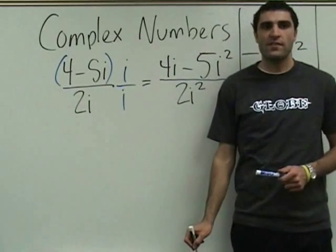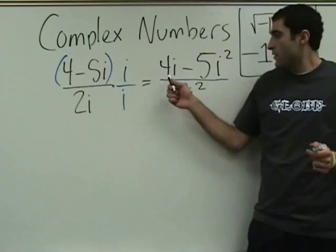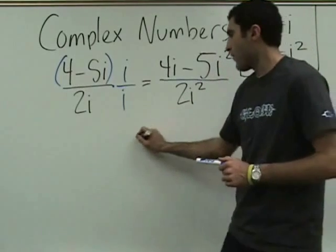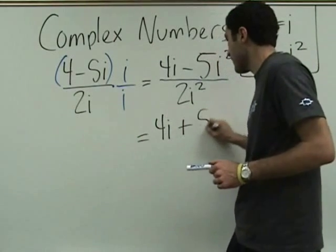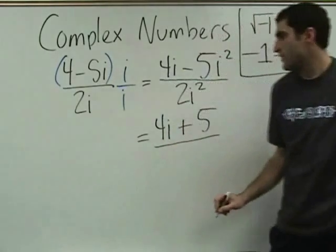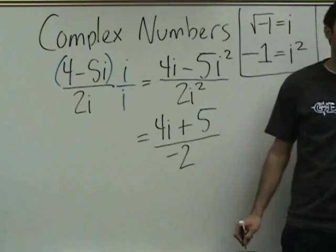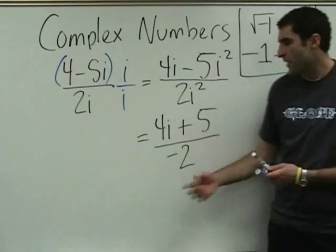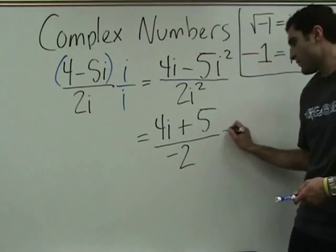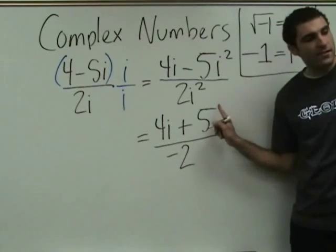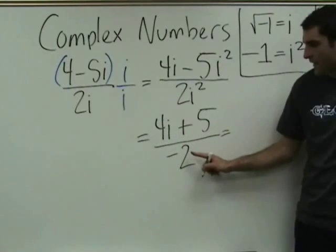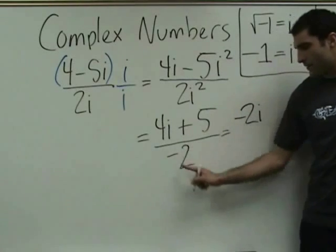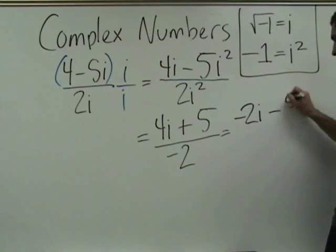Now we do a little simplification. On the top: 4i — what? Plus 5. Good. So 4i plus 5 over... and you said the bottom — what was it? Negative 2. Now, do you have a negative on the bottom? You can have a negative on the bottom. We can divide the negative 2 into both of these: 4i divided by negative 2 is negative 2i, and then 5 divided by negative 2 is minus 5 over 2.